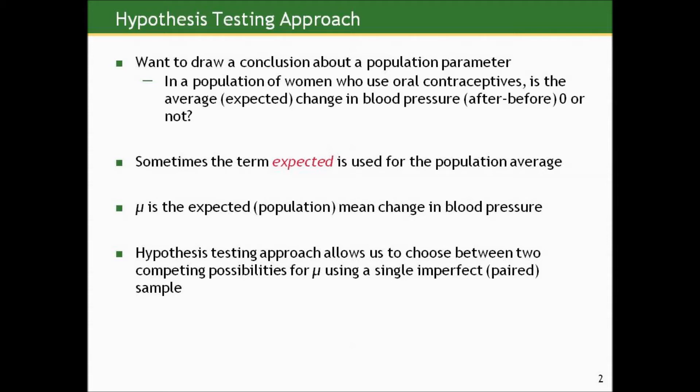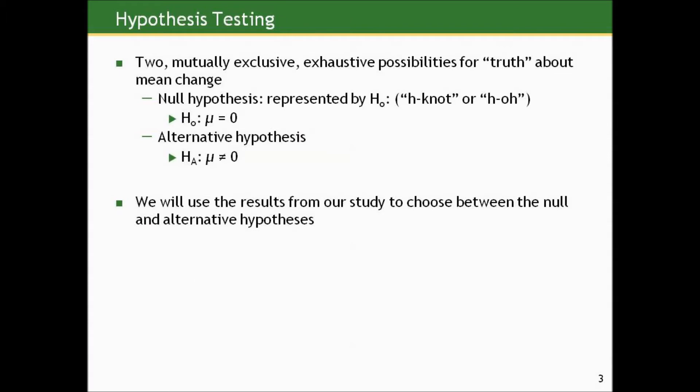In hypothesis testing, we want to draw a conclusion about a population parameter. One way to do that is to create a confidence interval for this population parameter. But another approach — instead of building into the truth from our sample, which is what the confidence interval does — hypothesis testing goes in the opposite direction. It says: why don't you specify some possibilities for the truth, the true mean change in blood pressure, and then we'll pick between them using your data from a single imperfect sample.